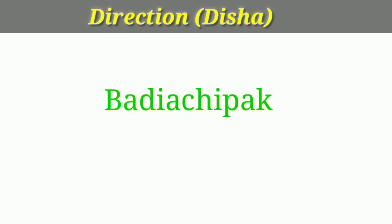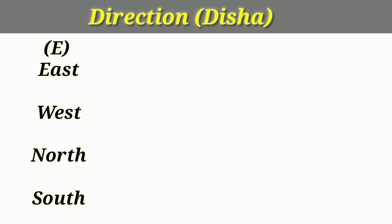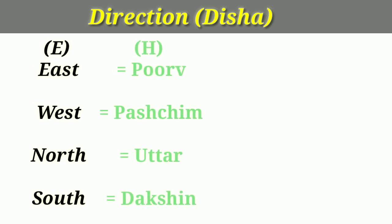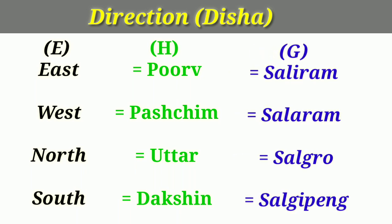Direction is called Disha. If you want to see the word Disha, it will be different to you. East — Purp. West — Pachim. North — Uttar. South — Dakshin. So: Purp, Pachim, Uttar, Dakshin. East, West, North, South.